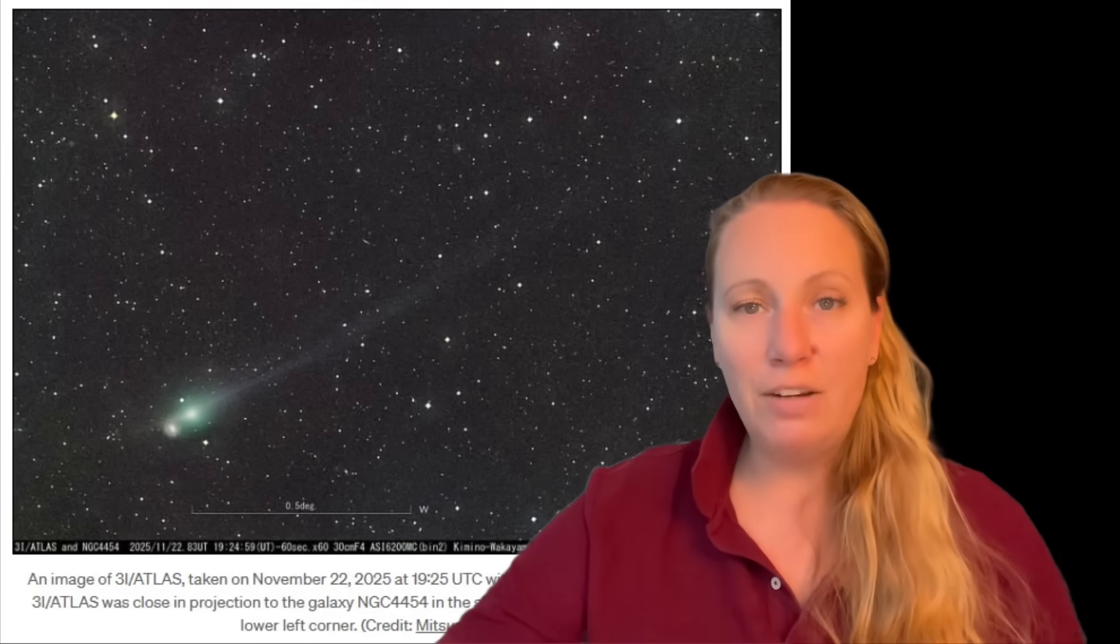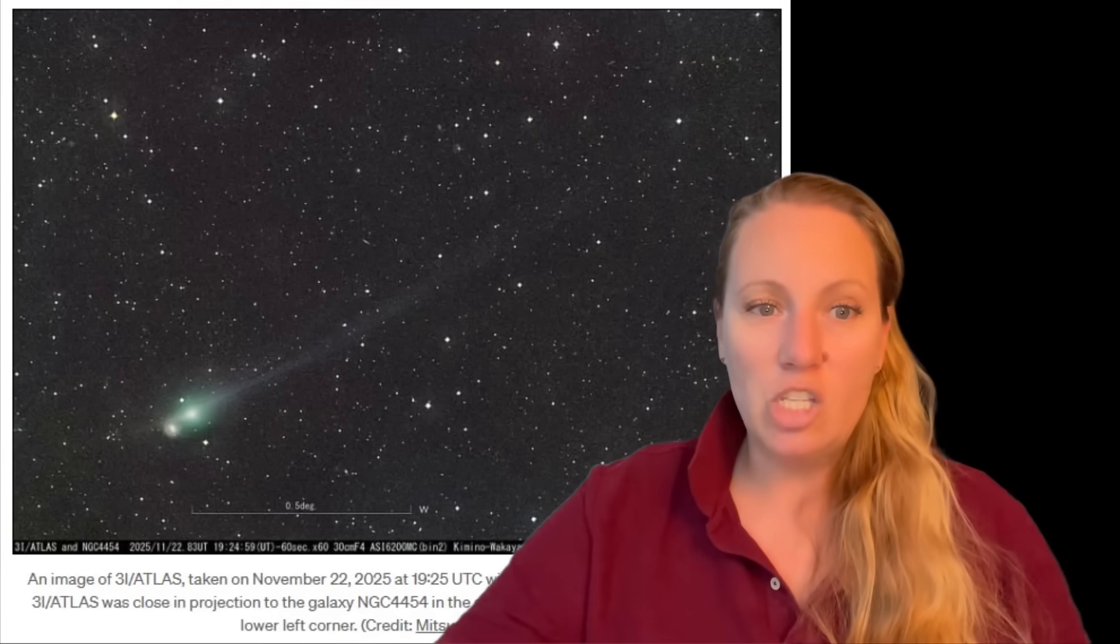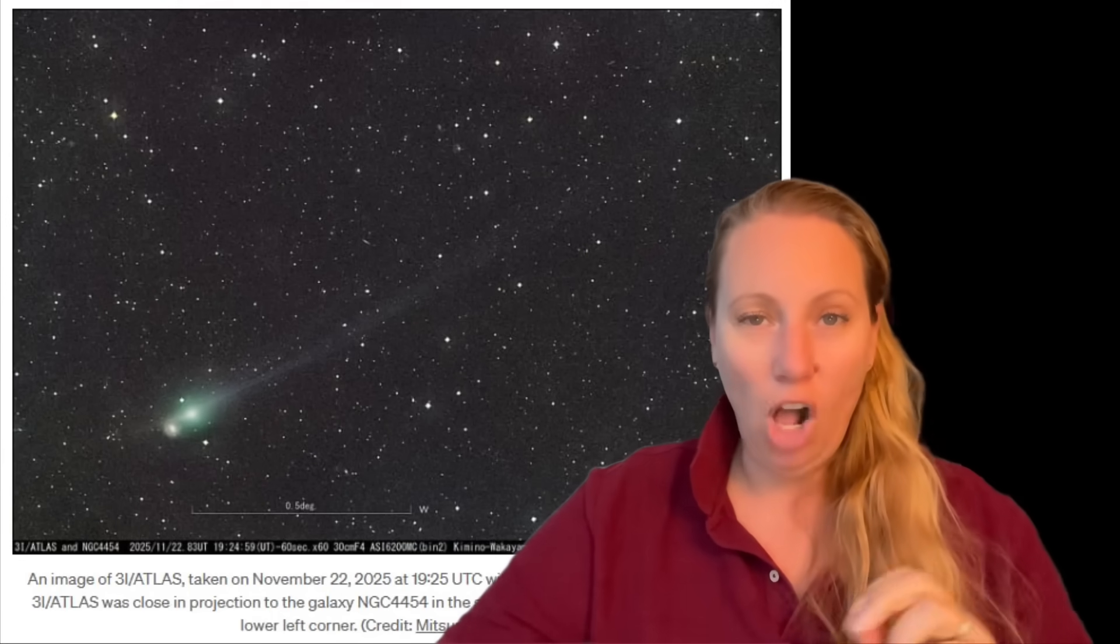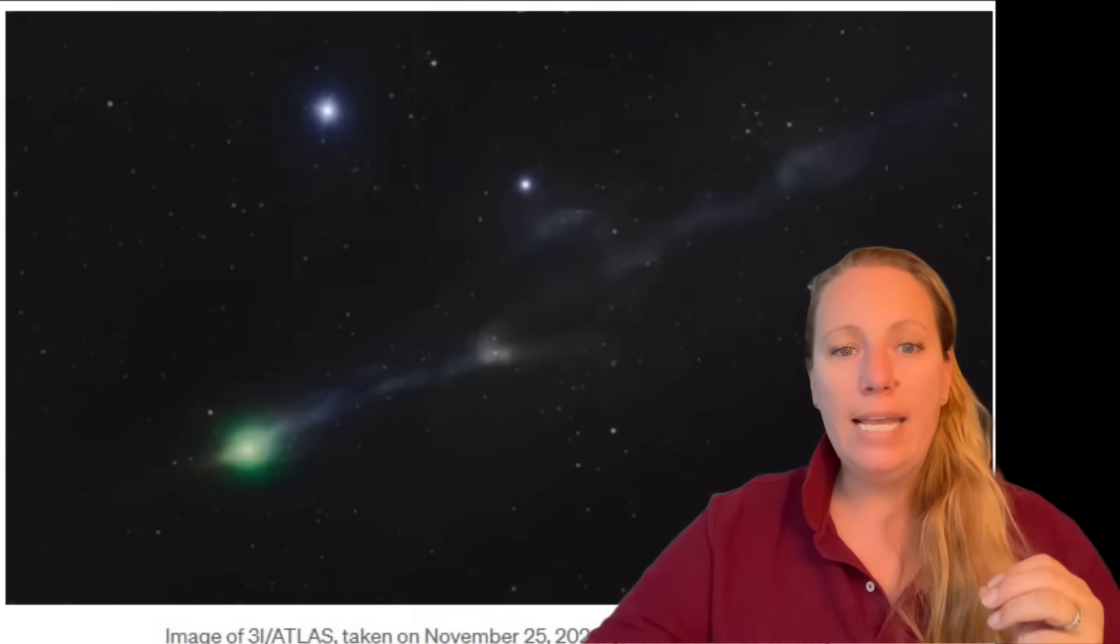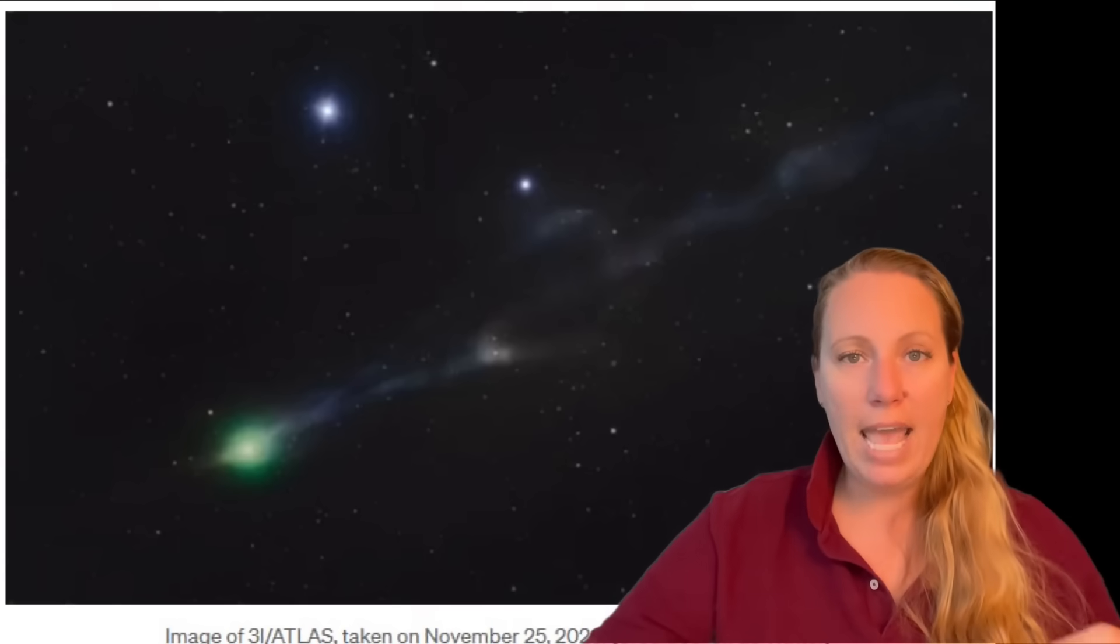Between November 22nd and November 24th, amateur astronomers took several images of interstellar object 3i Atlas and isn't it amazing that we get better pictures from these guys than from NASA. So all of these images show the same pattern: a glowing coma, a tight bright tail and a very strong anti-tail.